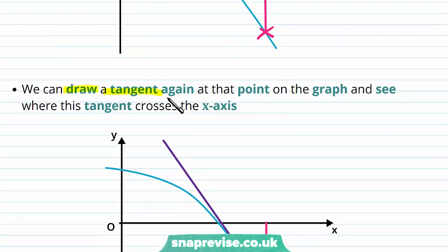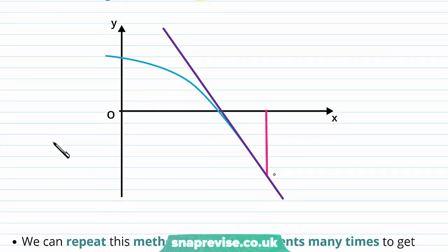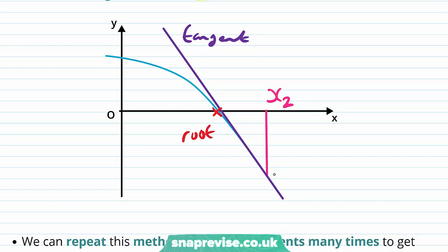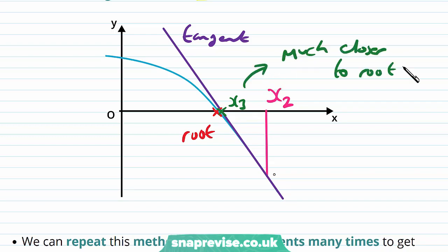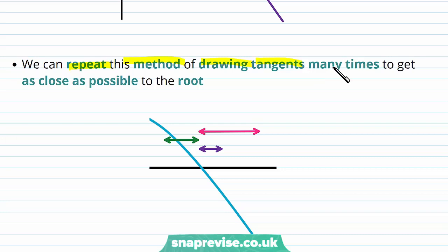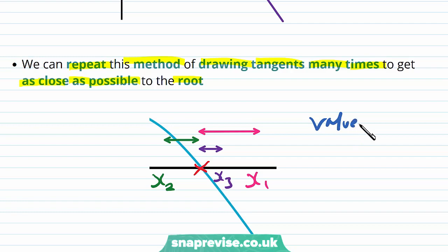We can then draw a tangent again at that new point on the graph and see where this tangent crosses the x-axis. So again we have our x2, and we're going to be drawing a new tangent to the curve at the point with x-coordinate x2. And then we have our root here, and we notice that our x3, where the tangent crosses the x-axis, is much closer to the root this time. We can repeat this method of drawing tangents many times to get as close as possible to the root. The values x1, x2, x3 get closer and closer to the root each time.